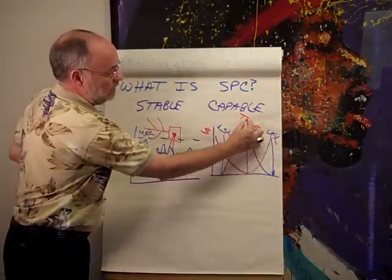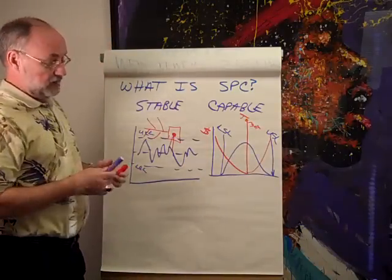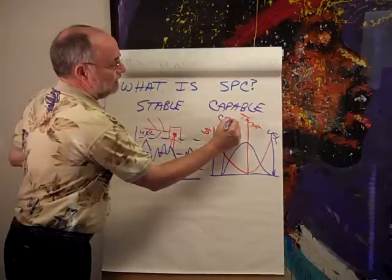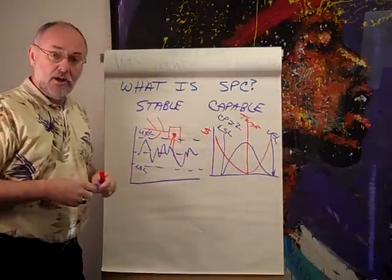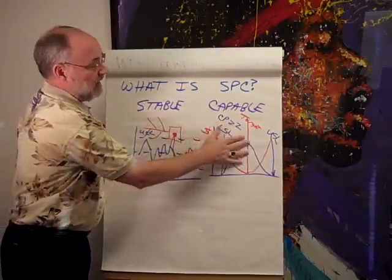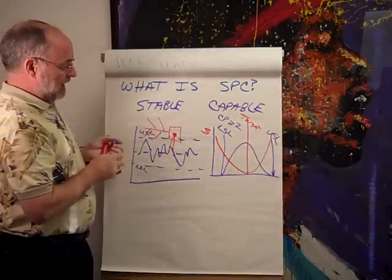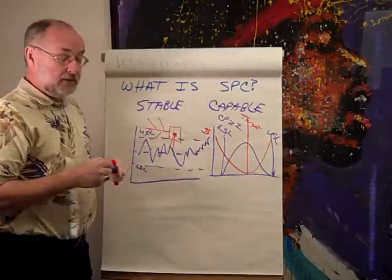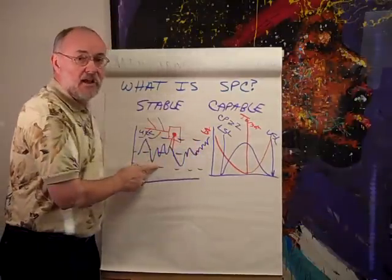So obviously these are things we want to avoid. We want to get to the point where the process is very centered. In Six Sigma, we'd end up with a CP and CPK that are greater than or equal to two. Our goal is to find ways to make our process stable and capable. If our process starts to do something like shift and go up, we want to detect that and take action to correct it and bring it back in line.